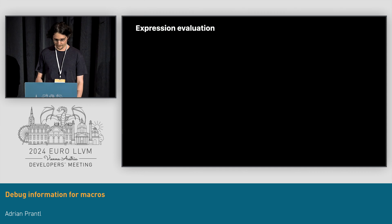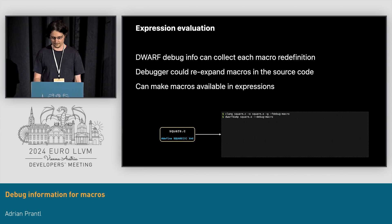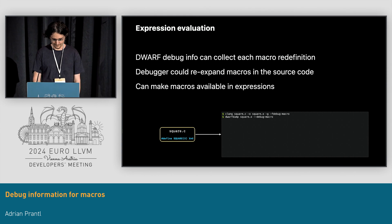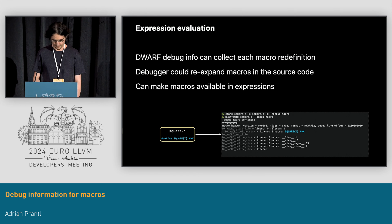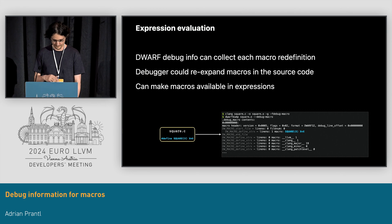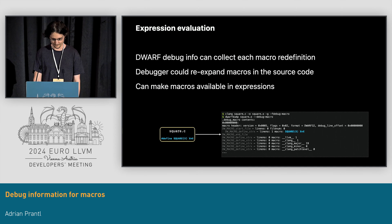Debuggers usually also offer a way to evaluate expressions in the source language. The DWARF standard specifies a way to capture all macro expansions in a source file in the debug info, and that allows a debugger to theoretically re-expand the source file and make all the macro definitions available in expressions. LLDB does not actually support this at the moment, but there's no technical reason for it not to. LLDB can also find macros in Clang modules, and that's in some ways a preferred way of doing it. This is what the DWARF representation of macros looks like.